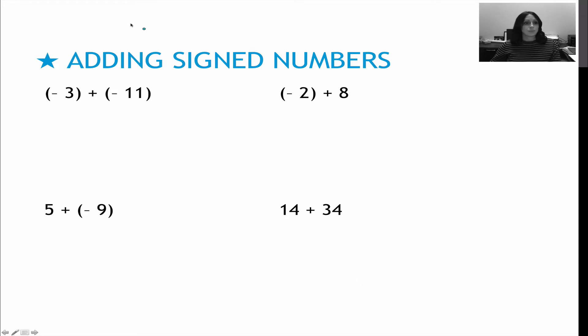We're going to try these together. First one, negative 3 plus negative 11. I've got two values that are the same sign, so I add them together to get 14 and give them the common sign. For my second question, negative 2 plus 8, these are different signs. The difference between 2 and 8 is 6. My bigger number is 8, and that value is positive, so my answer is positive.